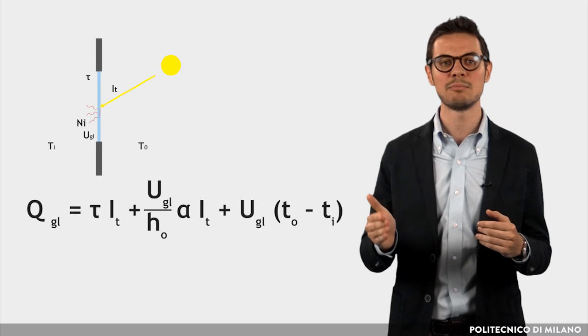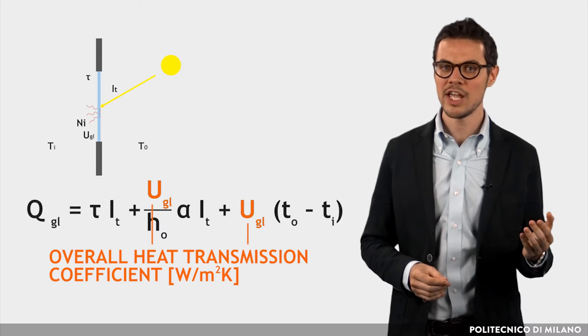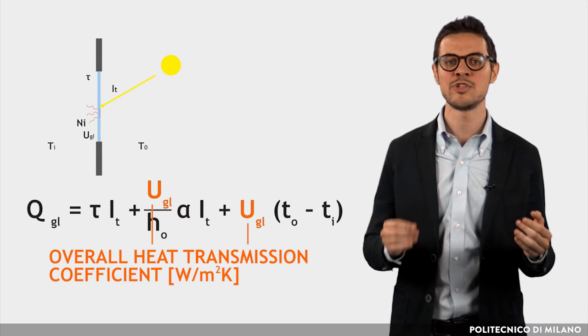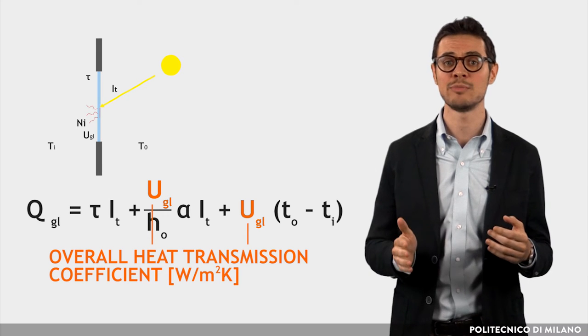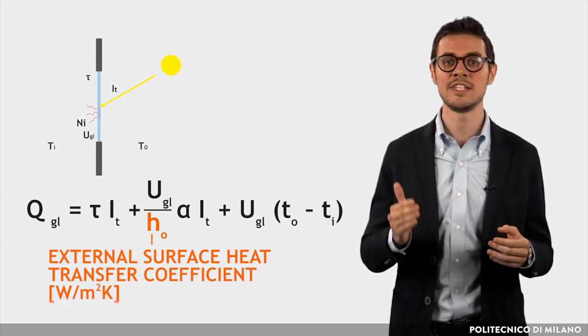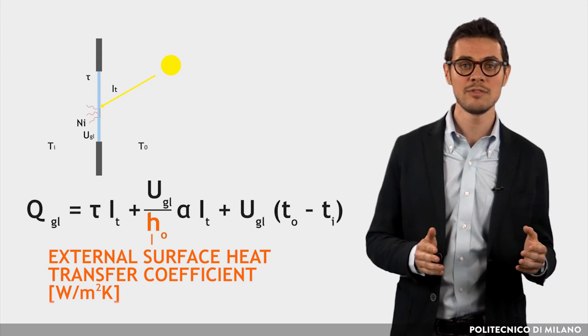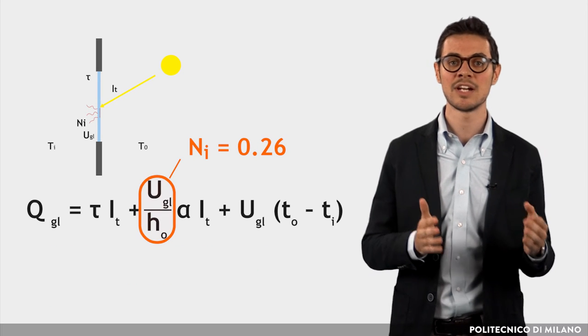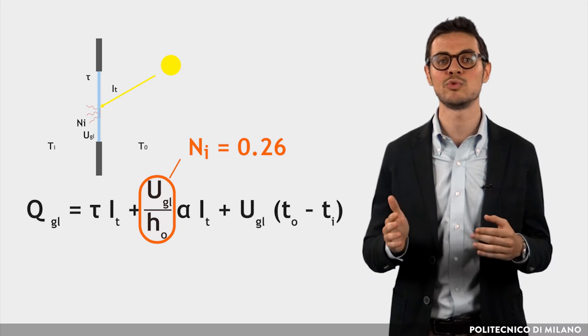Given by the ratio U_GL over H_O, where U_GL is the overall heat transmission coefficient of the glass, expressed in Watt over square meter Kelvin, and H_O is the external surface heat transfer coefficient in Watt over square meter Kelvin. Generally, for a 3 mm clear glass, N_I can be considered a constant and equal to 0.26.